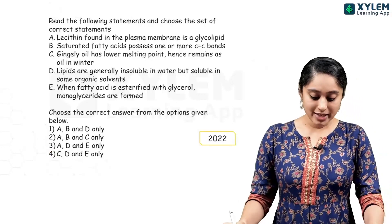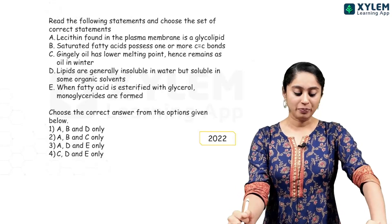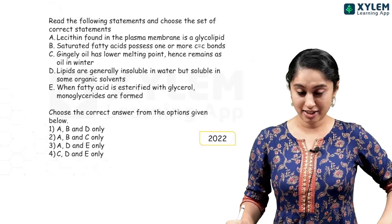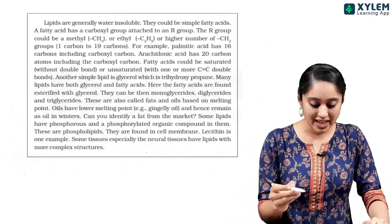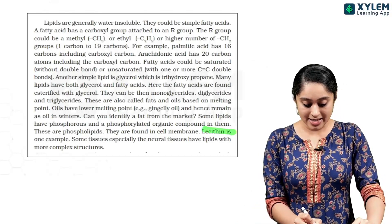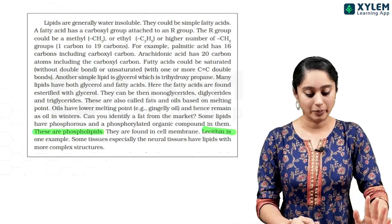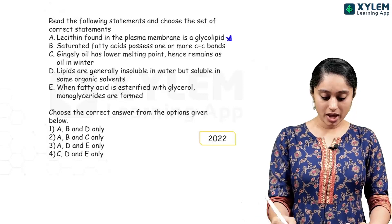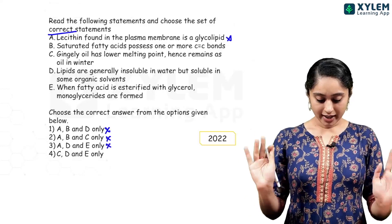Read the following statements and choose the set of correct statements. Firstly, it says lecithin found in the plasma membrane is a glycolipid. Lecithin is stated to be a glycolipid — but it is not a glycolipid. So option A is not a correct statement.